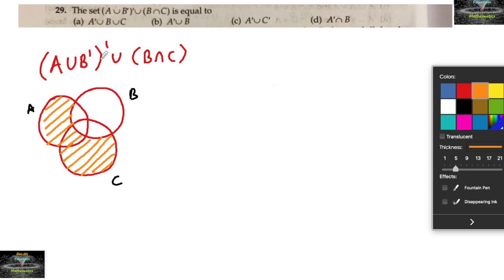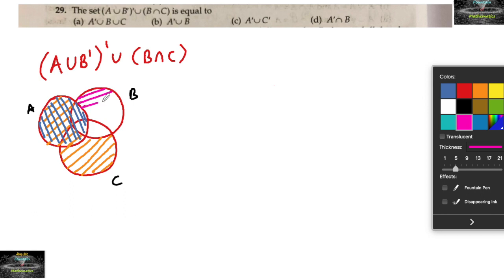Now B complement is taken union with A. Union with A means we consider the entire shaded region — either A or B complement — these two shaded regions together. And then we take its complement, meaning the area other than that shaded region. Let me use pink color to show this.